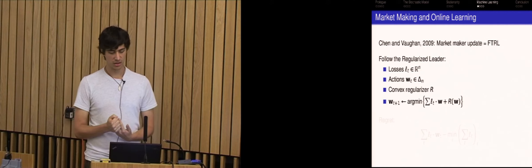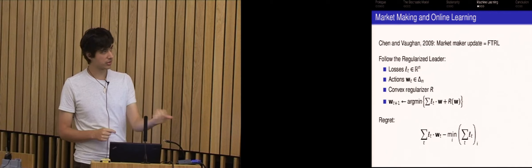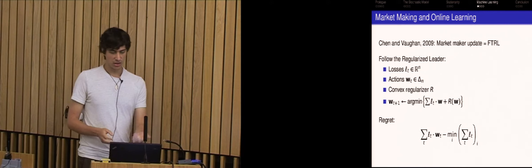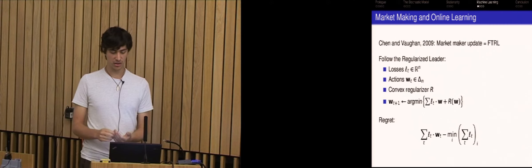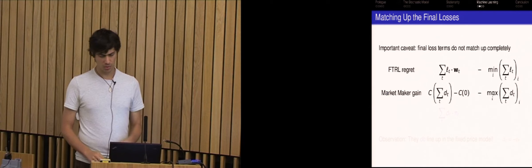So you have these losses, loss vectors, so linear losses and some action space. Let's say it's the simplex. So you choose some probability distribution. You could think of this as the experts algorithm or something. You choose a distribution over experts and you have some regularizer R, some convex function over distributions. And the way you choose the next distribution is you choose the distribution that does the best on the previous losses, but also you add this convex function to it to sort of smooth out this optimization.